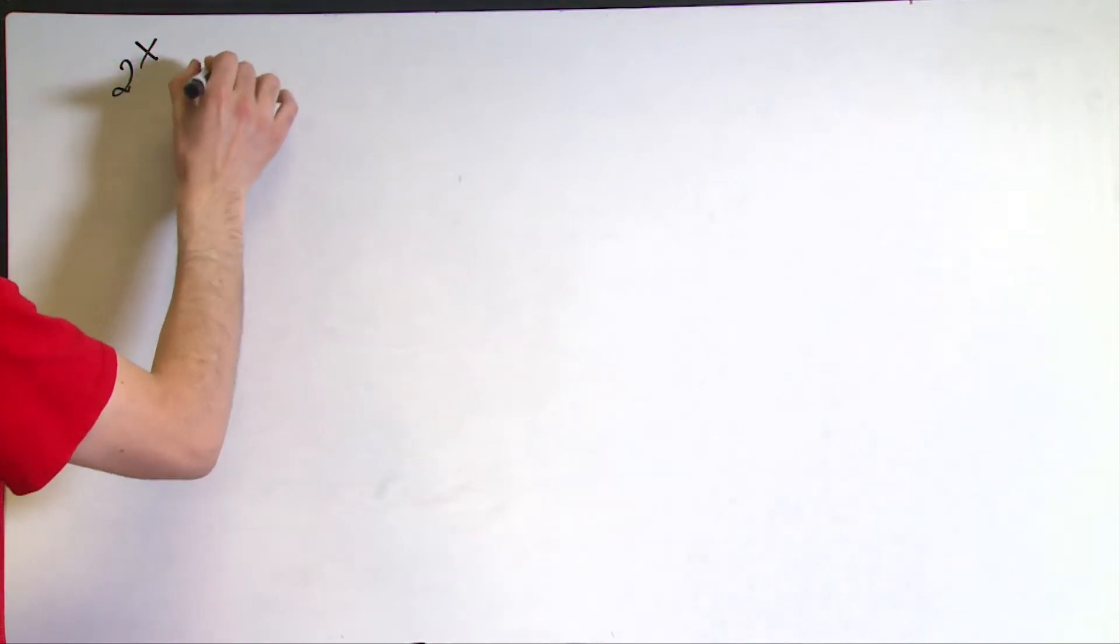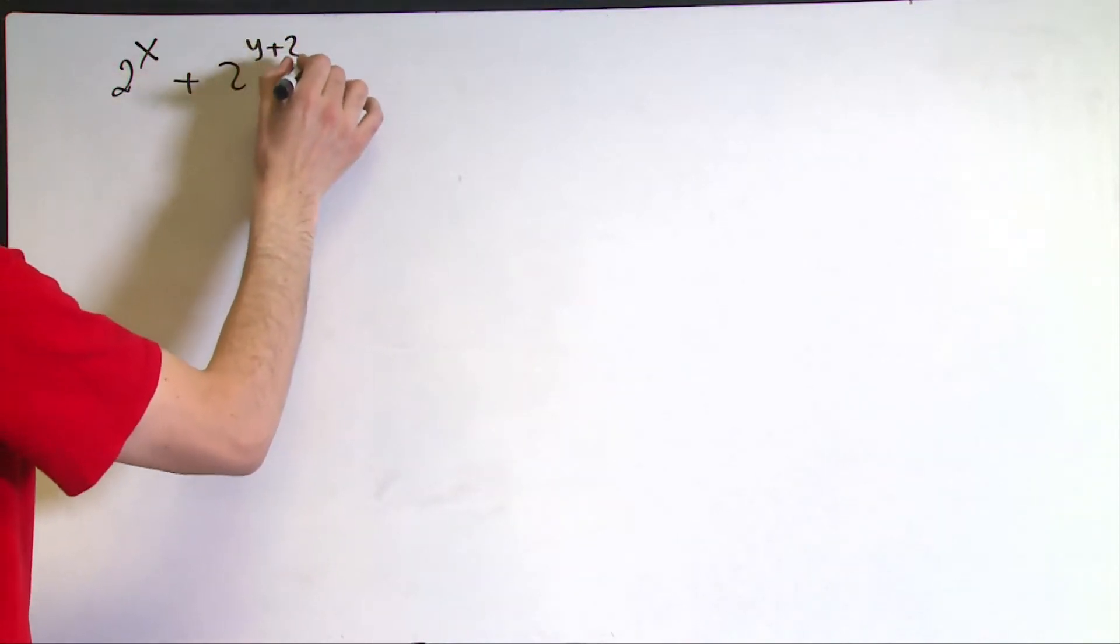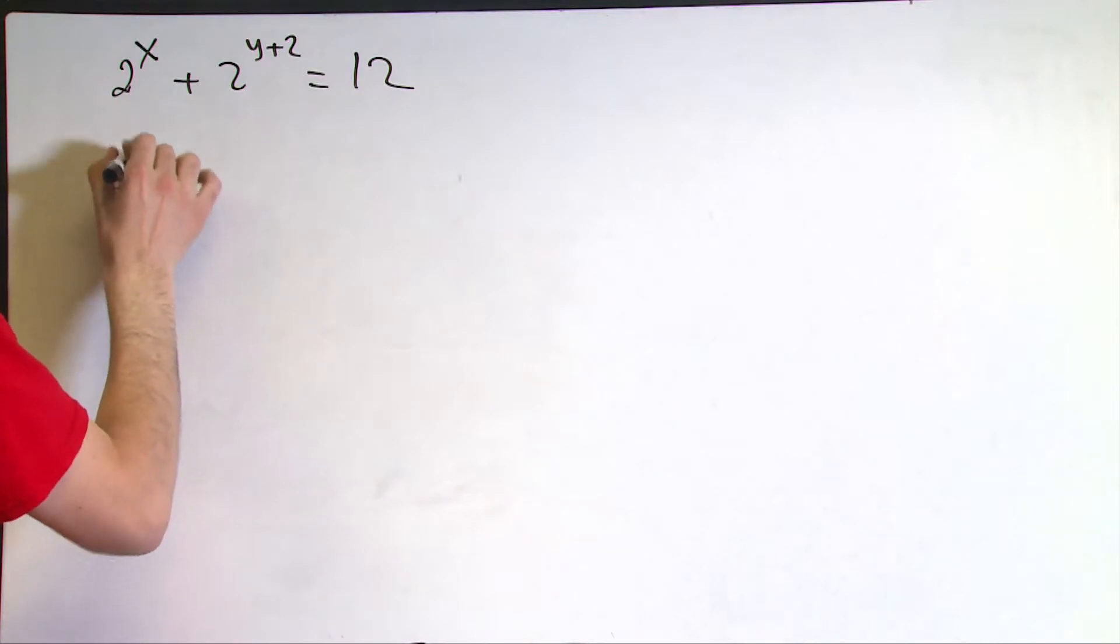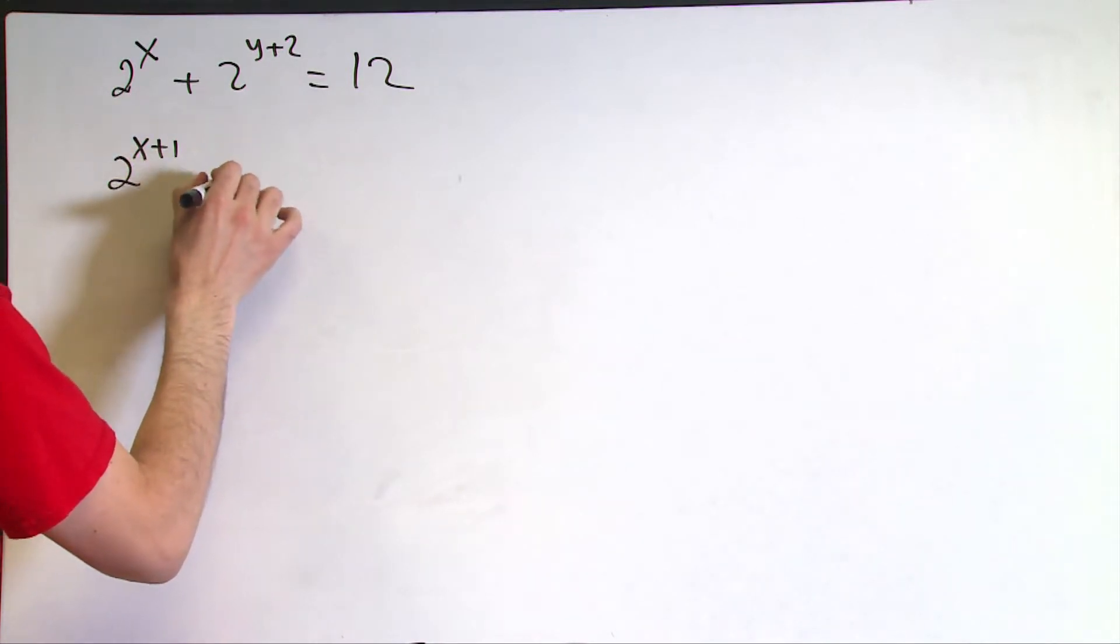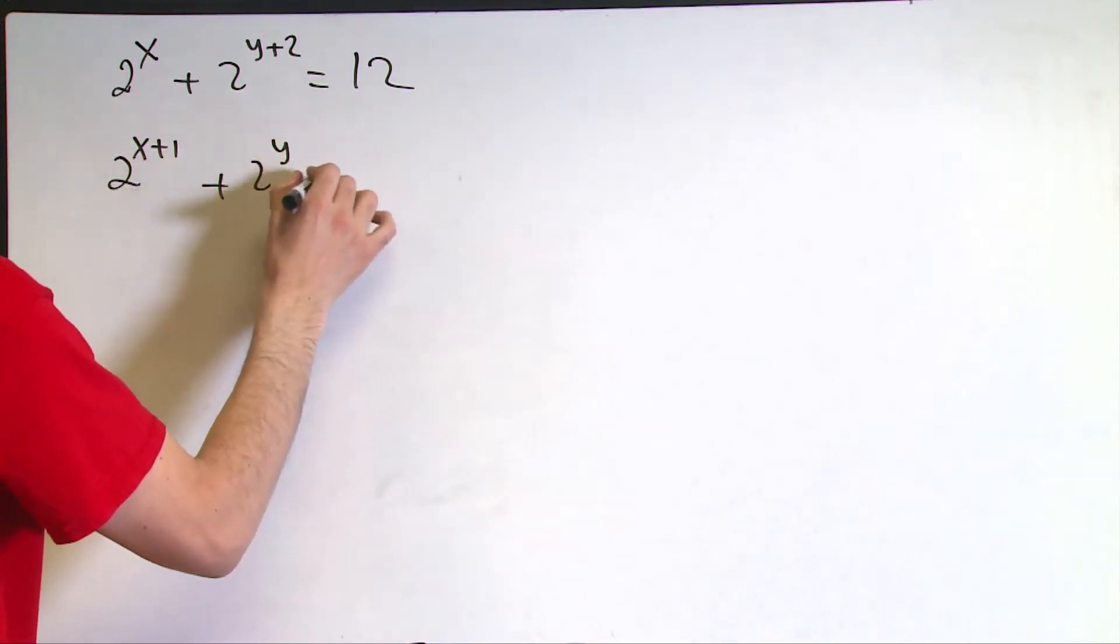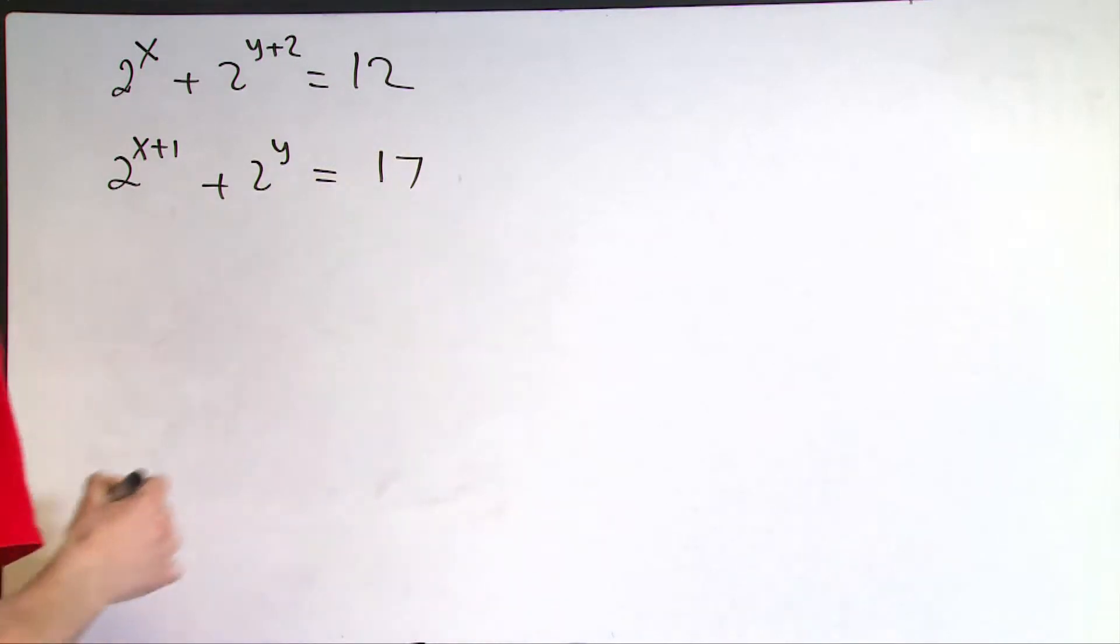Here is the answer to the question. This next question involves two very important concepts in middle school and high school mathematics: exponential expressions and system of equations. 2 to the power x plus 2 to the power y plus 2 equals 12, and 2 to the power x plus 1 plus 2 to the power y equals 17. I'll try to use the elimination method to get rid of either 2 to the power x or 2 to the power y. Now to do that, I need to have the same exponents for either of those expressions.